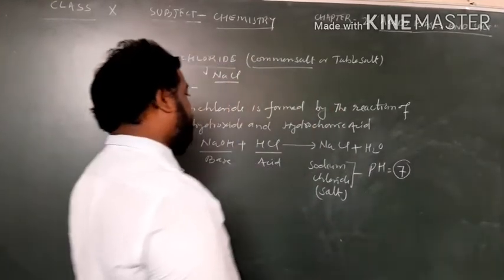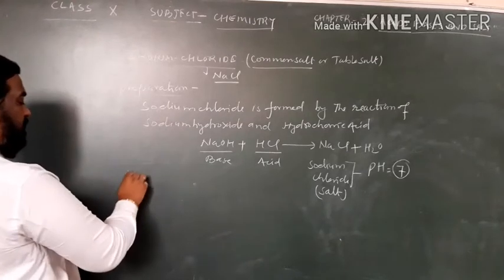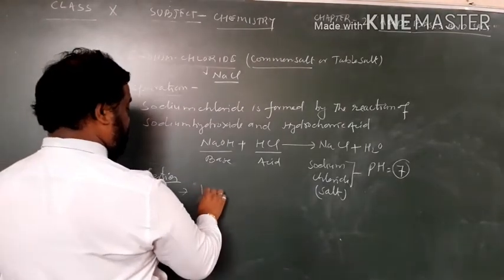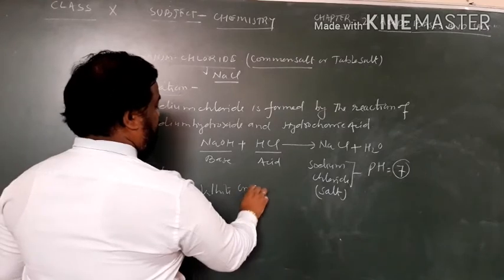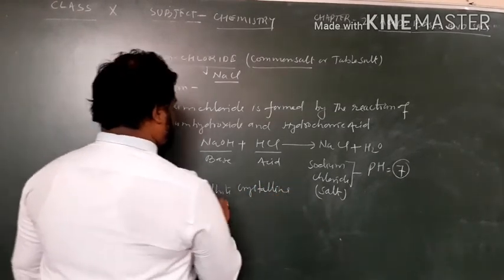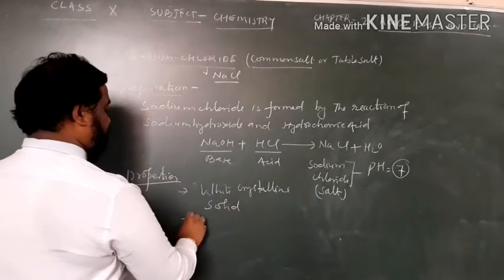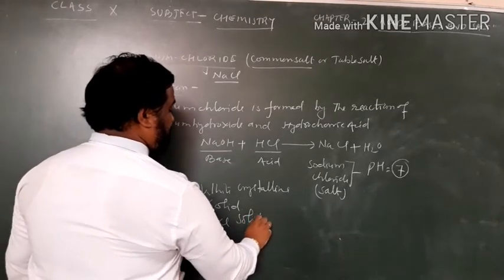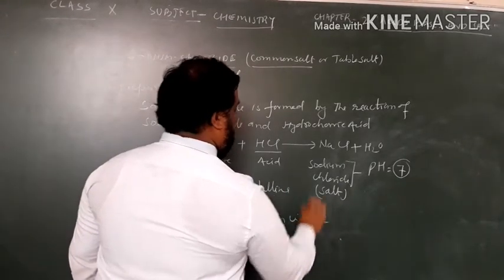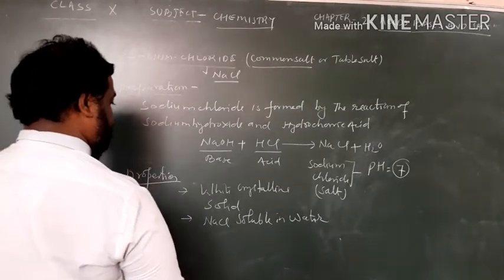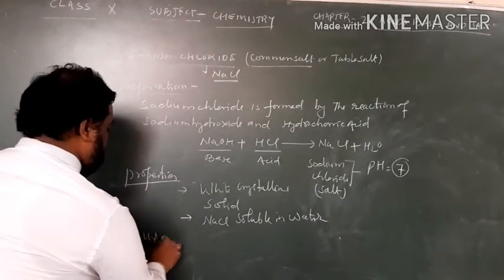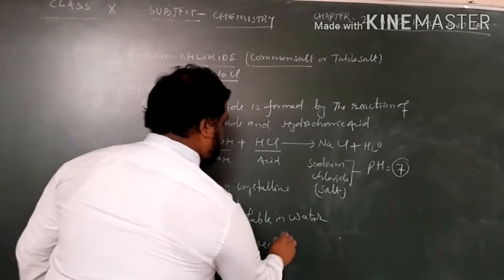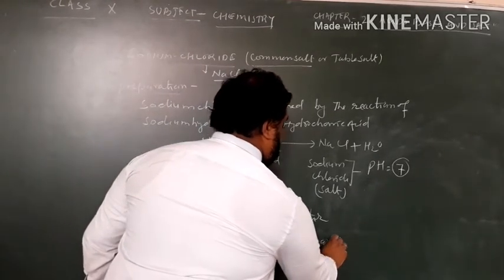The sodium chloride has pH value 7, and its properties are white crystalline solid. Second, NaCl is soluble in water.